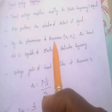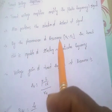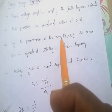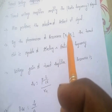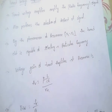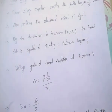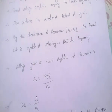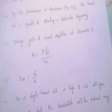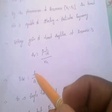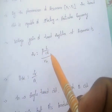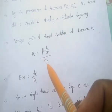Resonance is nothing but a phenomenon. It occurs whenever the inductive reactance is equal to the capacitive reactance. The voltage gain of this tuned amplifier at resonance is Av equal to beta into L by CR by Rin.